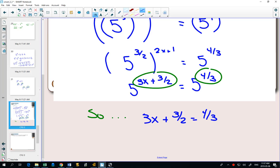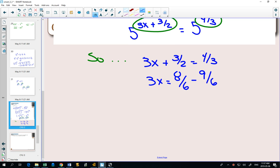How would you solve for x? Subtract the 3 halves on both sides. Now, if I'm going to have 4 3rds minus 3 halves, how do I subtract fractions? I need a common denominator. Are you OK if I change the 4 3rds to 8 over 6, and the 3 halves to 9 over 6? So then I get 3x equals negative 1 over 6.